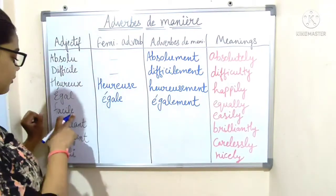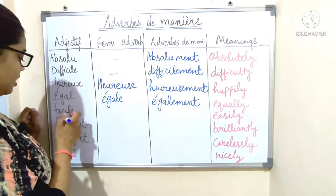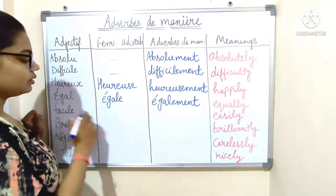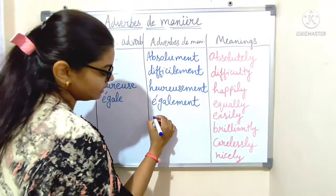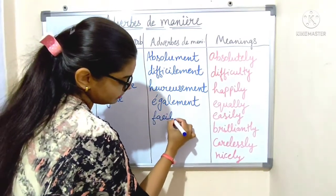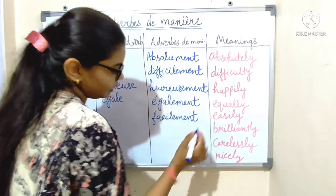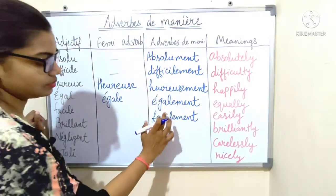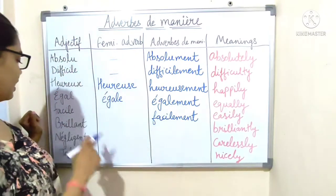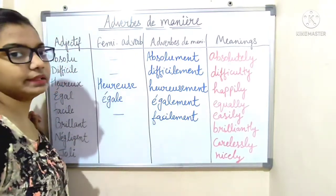Next: 'facile' — it ends with the vowel E, so we directly add '-ment': 'facilement', which means 'easily'.